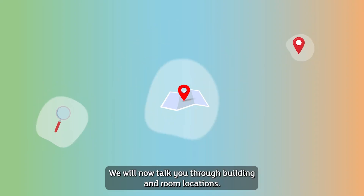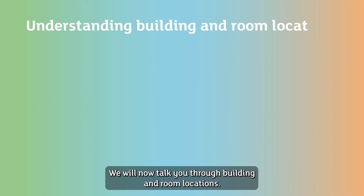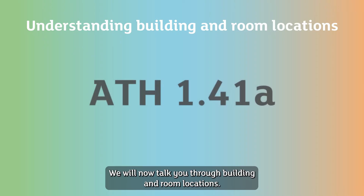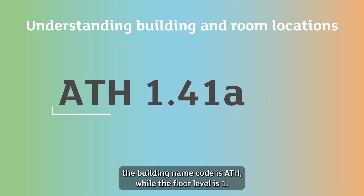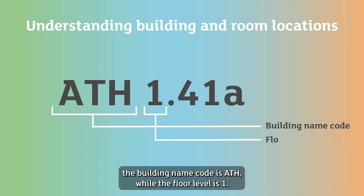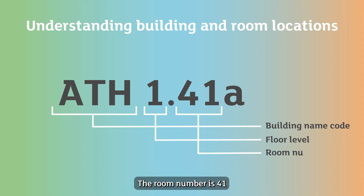We will now talk you through building and room locations. On the diagram, the building name code is ATH, while the floor level is 1. The room number is 41 and the subroom is A.